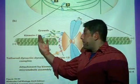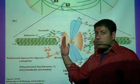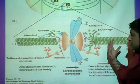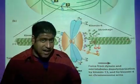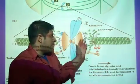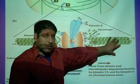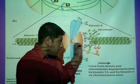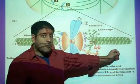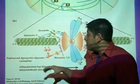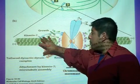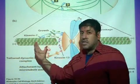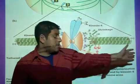As kinesin-7 walks along the microtubule on the left side towards the plus-end, it's going to be pushing up against this chromosome and assisting in taking it to the right. On the right side of the chromosome, you have kinesin-13 destabilizing the microtubule and dynein pulling on the chromosome, bringing it to the right side of the cell. On the left side of the chromosome, you have kinesin-7 pushing up against the chromosome, also helping it to move towards the right of the cell.